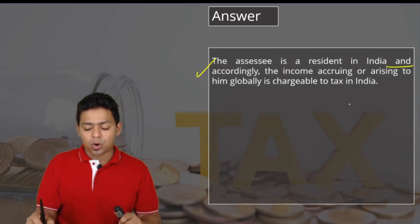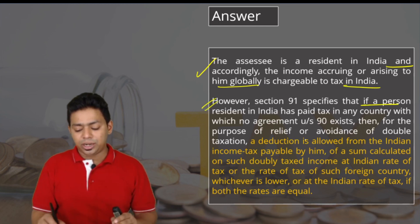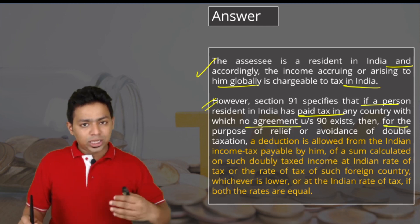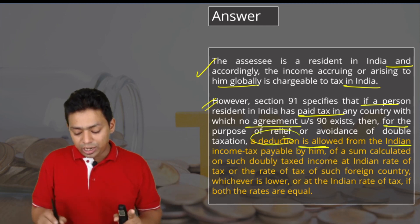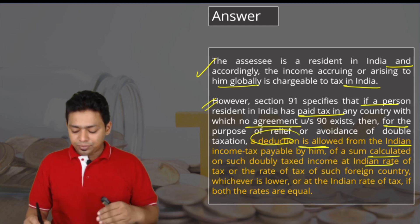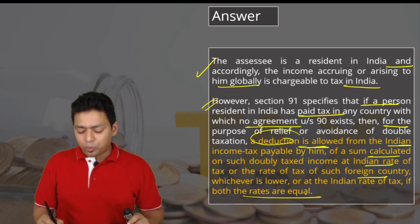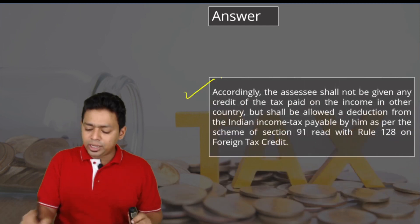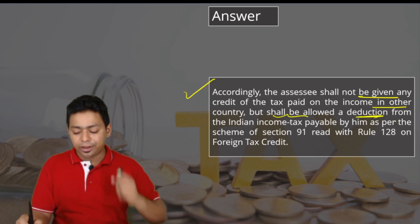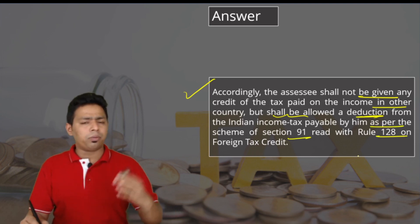The assessee is resident in India, so income accruing and arising globally is chargeable to tax in India. However, Section 91 specifies that if a person resident in India has paid tax in any country with which no agreement under Section 90 exists, then for the purpose of relief from double taxation, a deduction is allowed from Indian income tax payable — calculated on such doubly taxed income at the Indian rate of tax or the rate of tax of the foreign country, whichever is lower. Accordingly, the assessee shall not be given credit but shall be allowed a deduction or relief from Indian income tax payable under Section 91 read with Rule 128 for MAT adjustment.